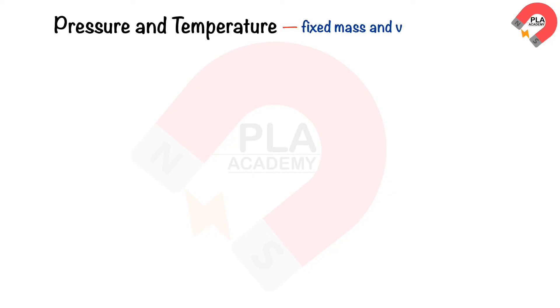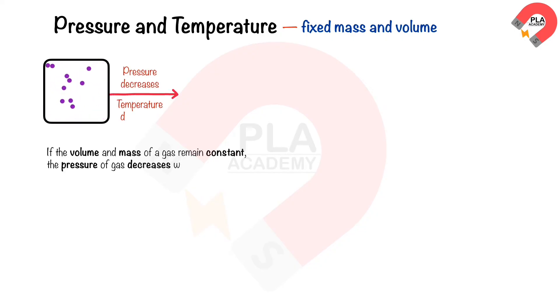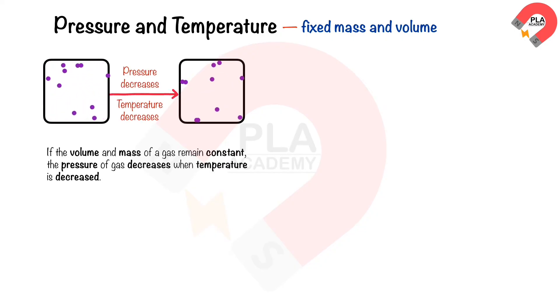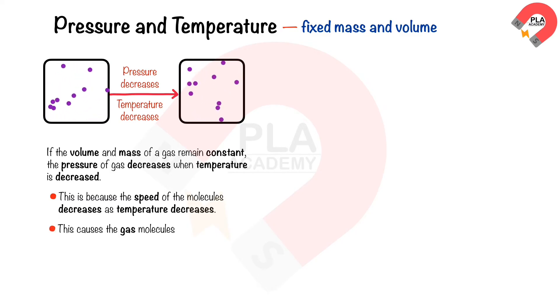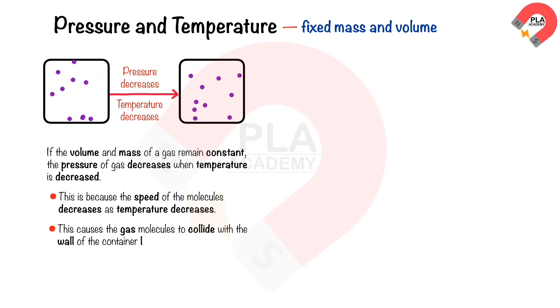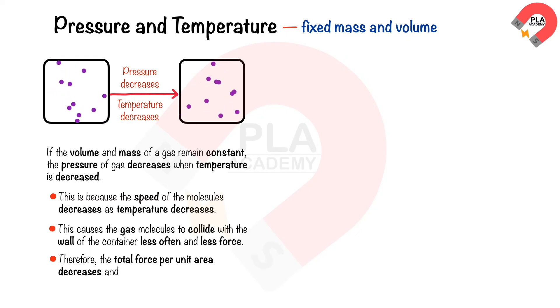The relationship between pressure and temperature of a gas at fixed volume and mass: if the volume and mass of a gas remain constant, the pressure of the gas decreases when temperature is decreased. This is because the speed of the molecules decreases as temperature decreases, causing the gas molecules to collide with the wall of the container less often and less hard. Therefore, the total force per unit area decreases and pressure also decreases.